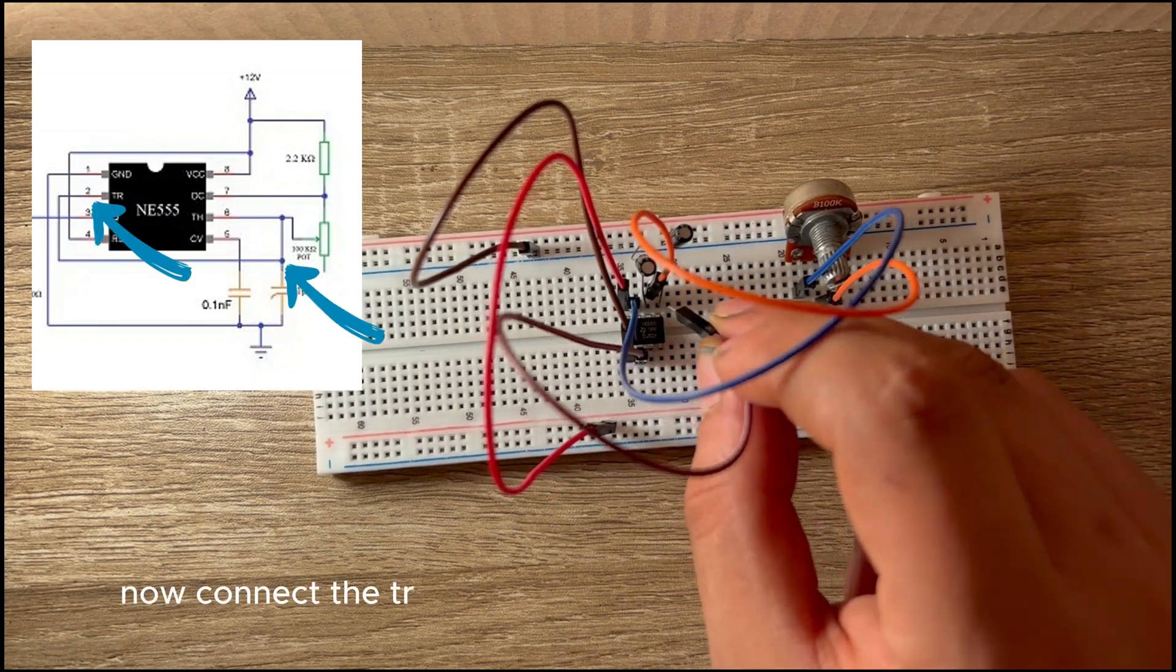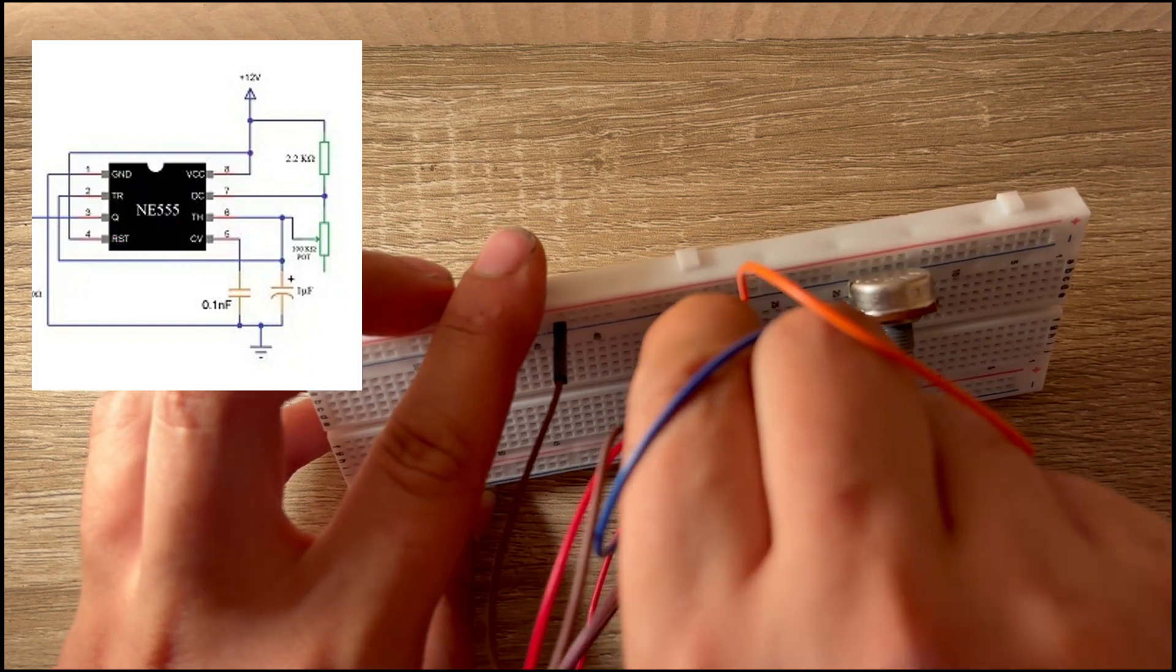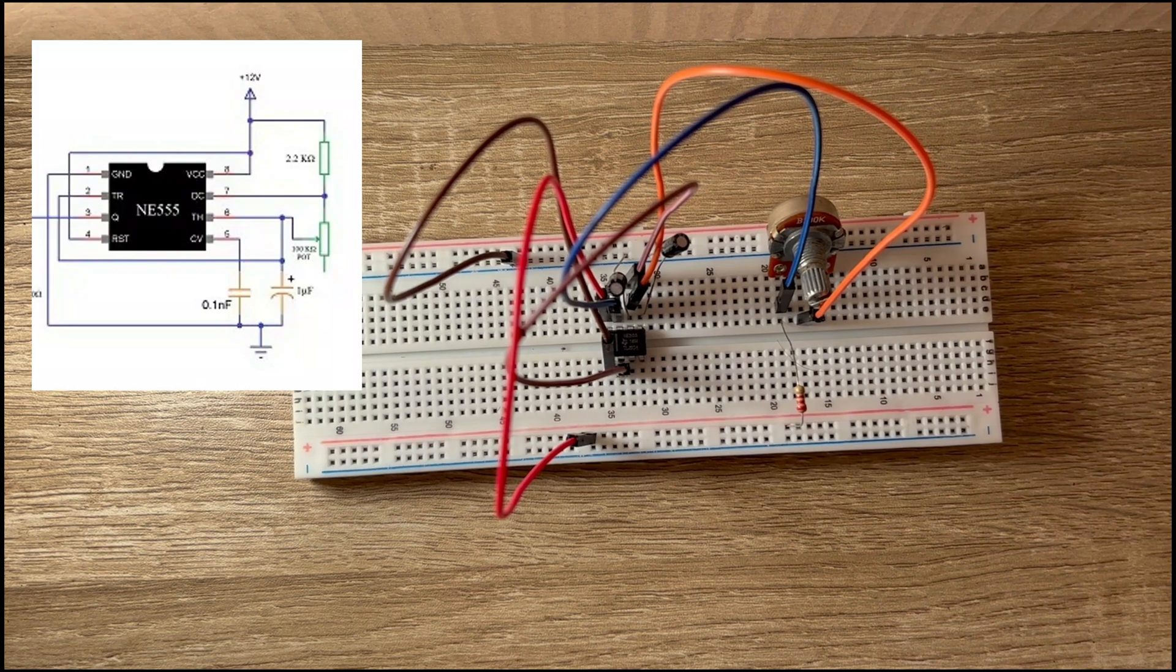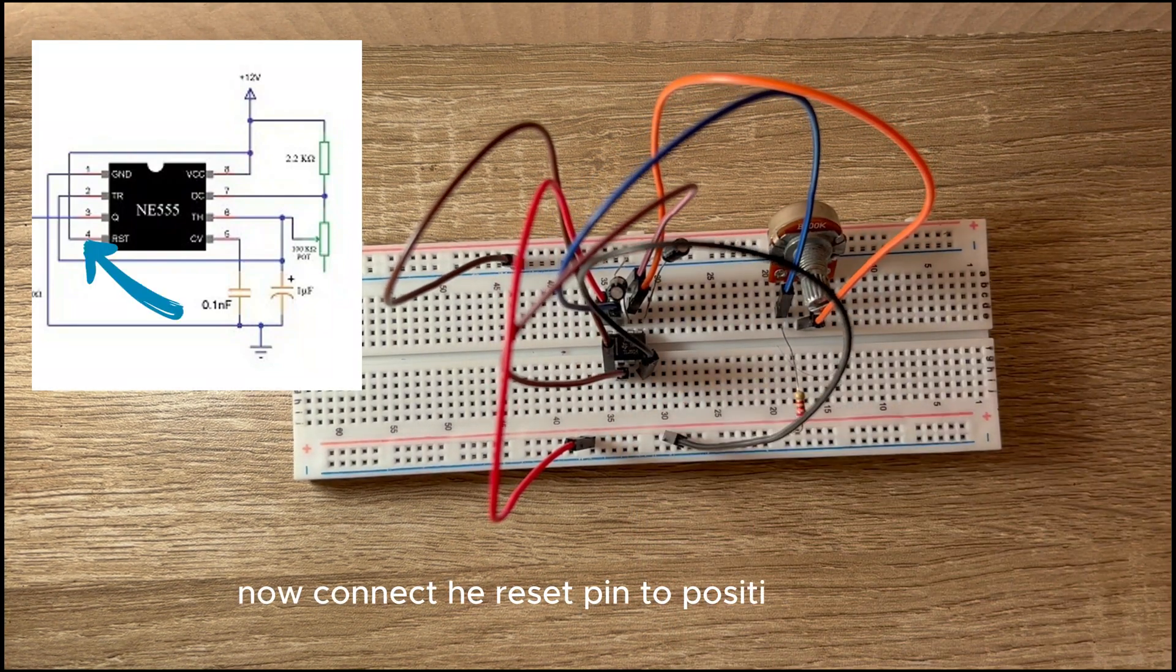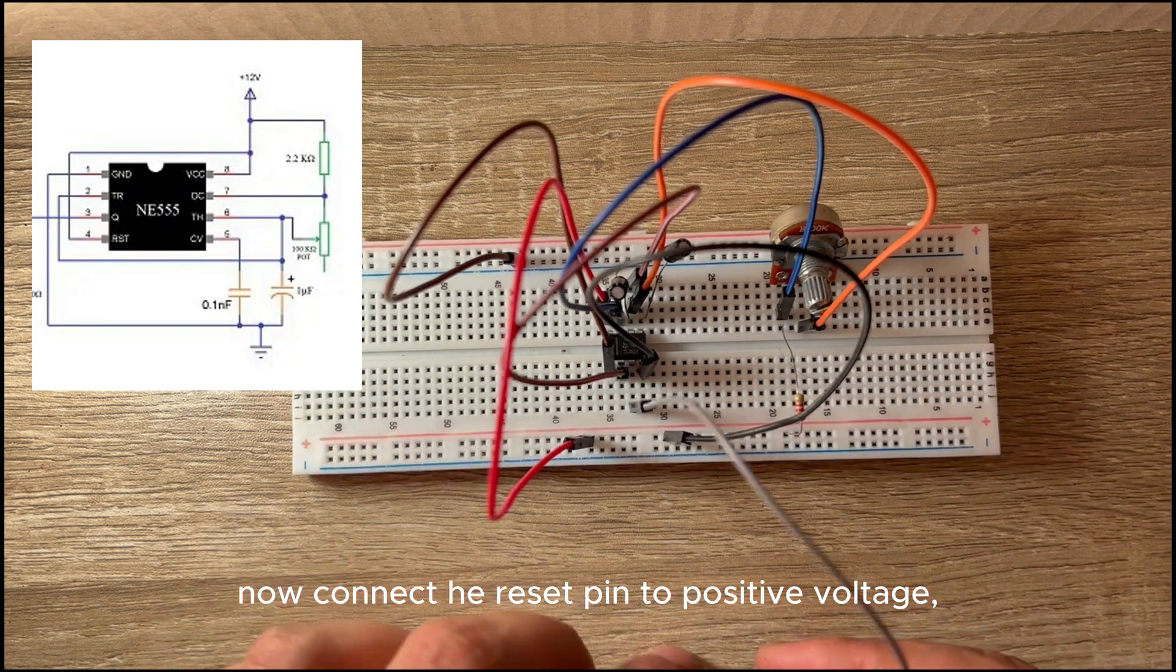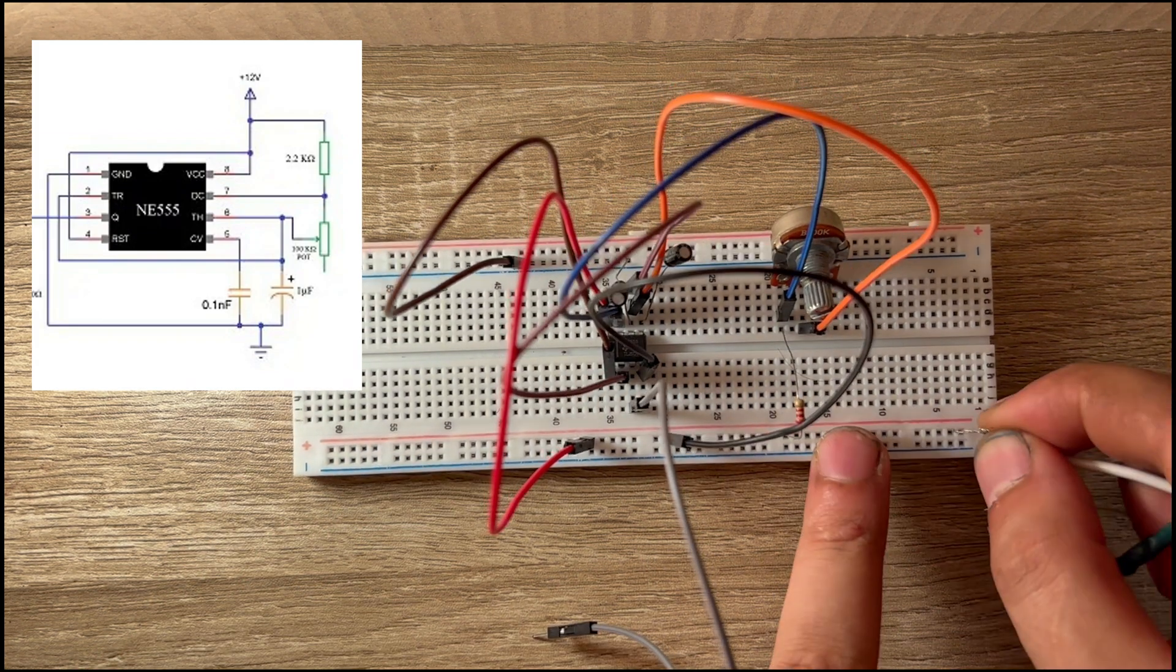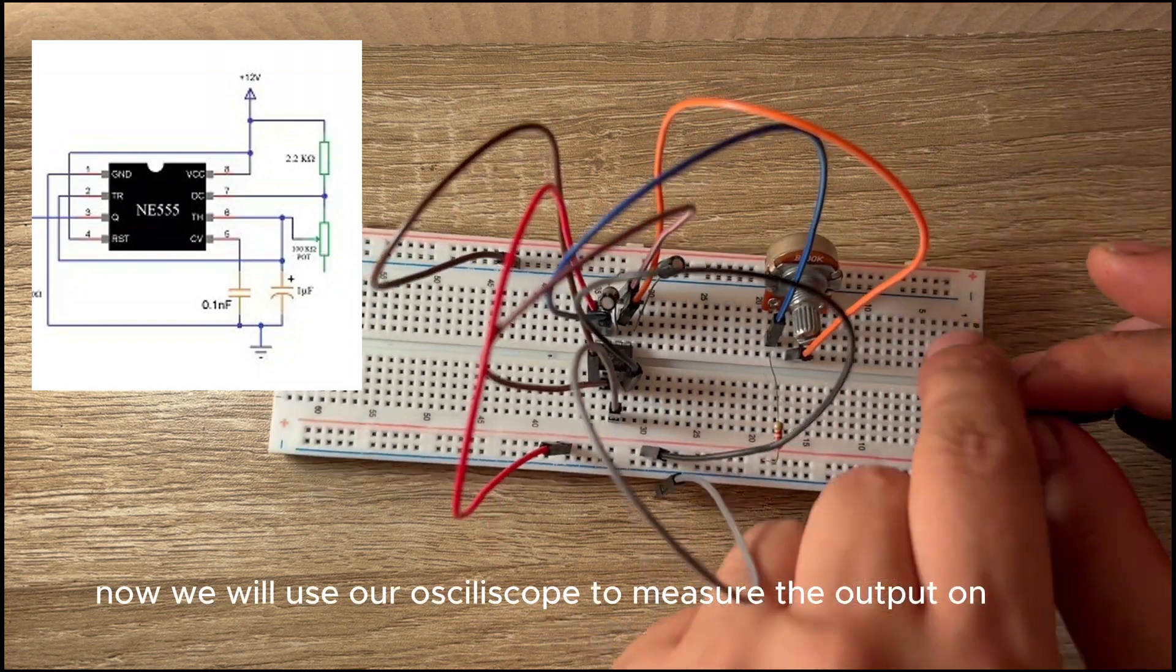Now connect the trigger pin to the second pin of potentiometer. Now we will use our oscilloscope to measure the output on pin 3.